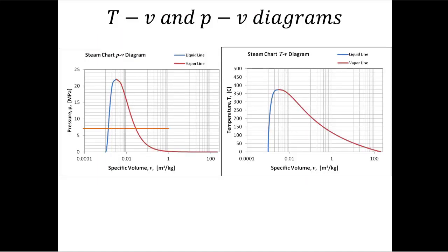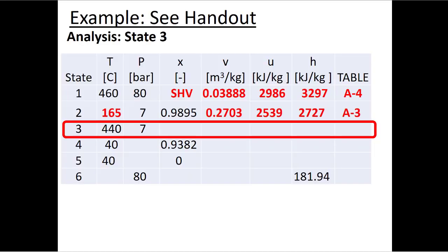On the PV diagram the pressure is 7 bar and quality is almost 1, so I place state two just inside the vapor dome beside the saturated vapor line. On the TV diagram, I know the saturation temperature for 7 bar, and again the quality is very close to one, so I place that state point just inside the vapor dome as well.